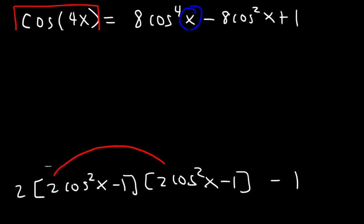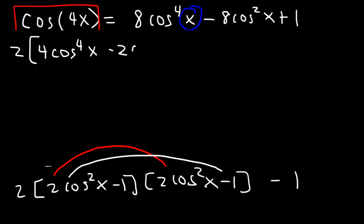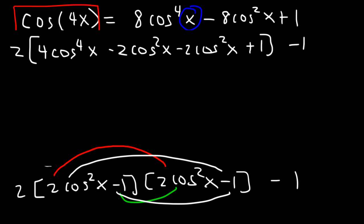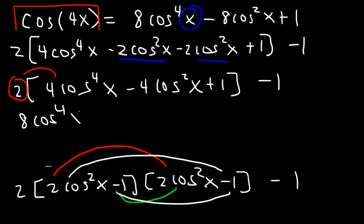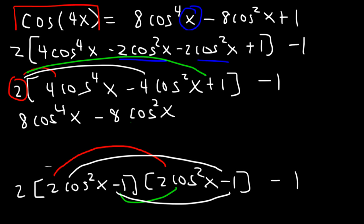So we have 2 times (2cos²x - 1)(2cos²x - 1) minus 1 on the outside. FOILing: 2cos²x times 2cos²x is 4cos⁴x; 2cos²x times -1 is -2cos²x; -1 times 2cos²x is another -2cos²x; and -1 times -1 is +1. Combining like terms: -2 - 2 = -4, giving us 2(4cos⁴x - 4cos²x + 1). Distributing the 2: 8cos⁴x - 8cos²x + 2.